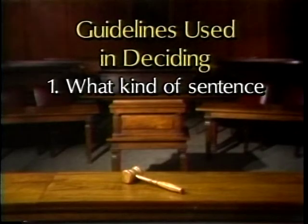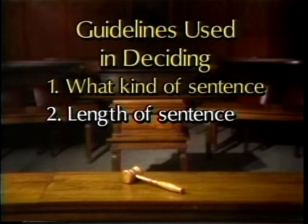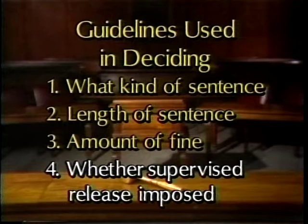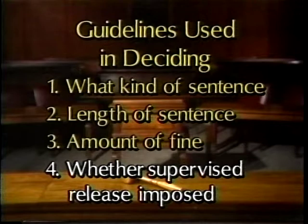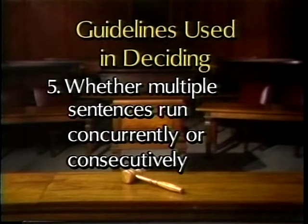Judges use the guidelines to help them decide what kind of sentence to impose — that is, whether to impose a sentence of probation, a fine, or a period of imprisonment; the appropriate length of a sentence; the appropriate amount of a fine; whether the offender should serve a term of supervised release following imprisonment and, if so, the length of that term; and whether multiple sentences of imprisonment should run concurrently — at the same time — or consecutively, one followed by another.